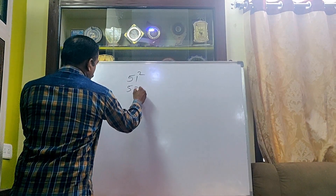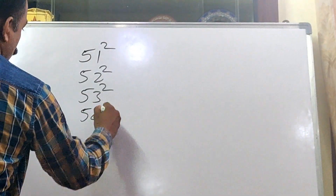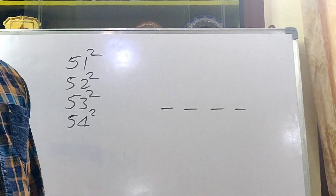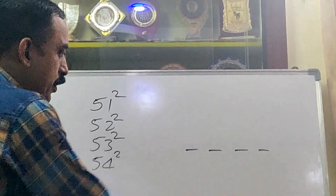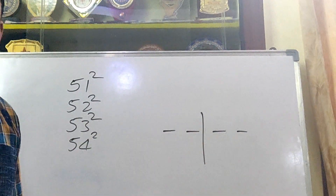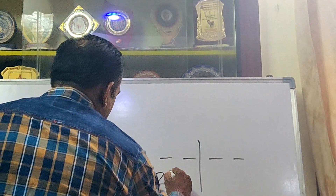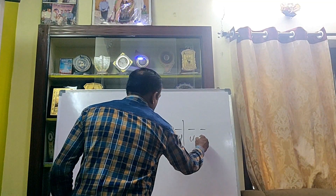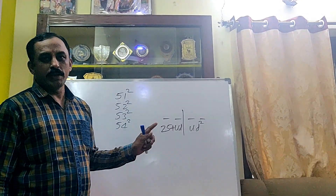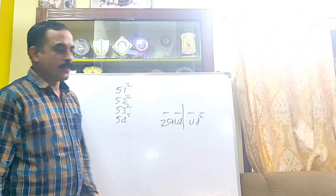The square of any number from 51 to 59 is a 4-digit number. Divide it into 2 parts. The first part is a 2-digit number, and the second part is also a 2-digit number. The first part is 25 plus the unit digit, and the second part is the unit digit squared.